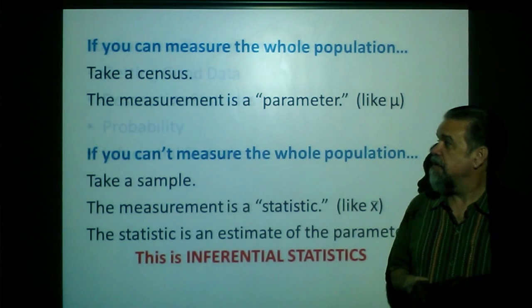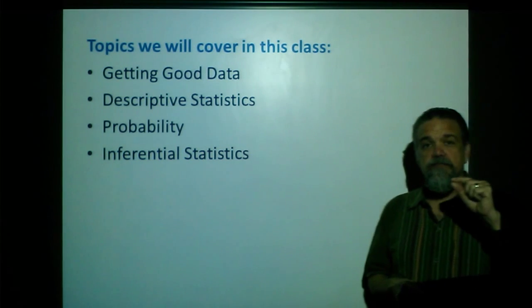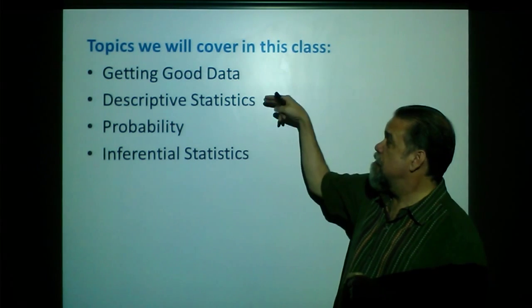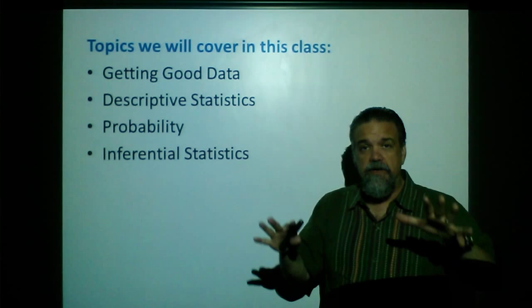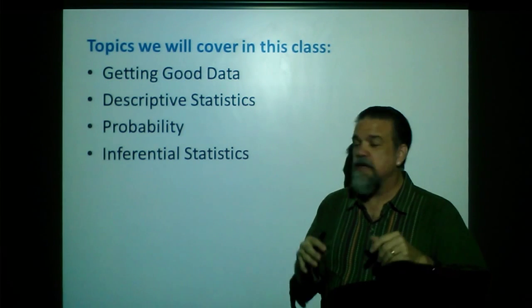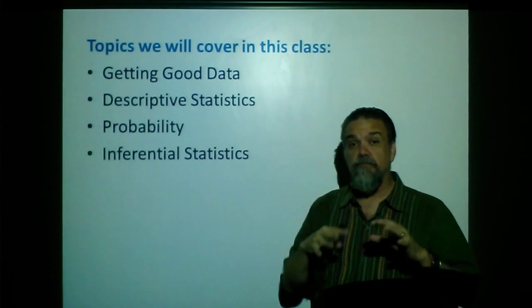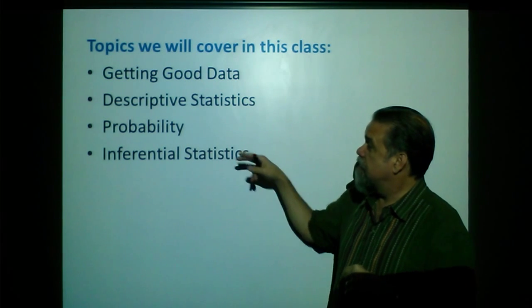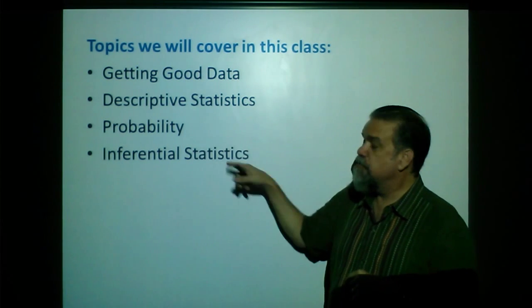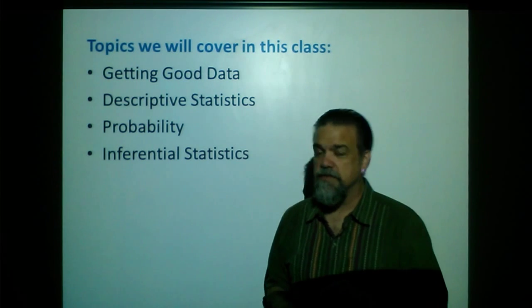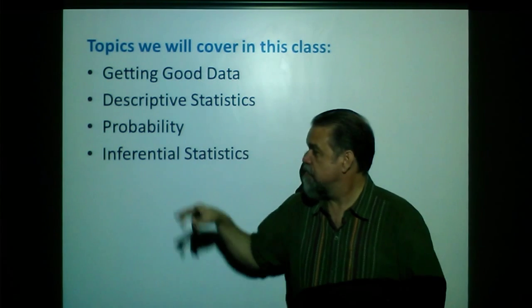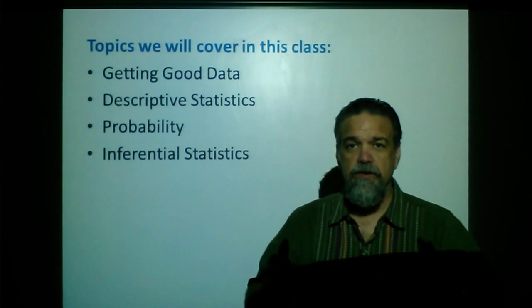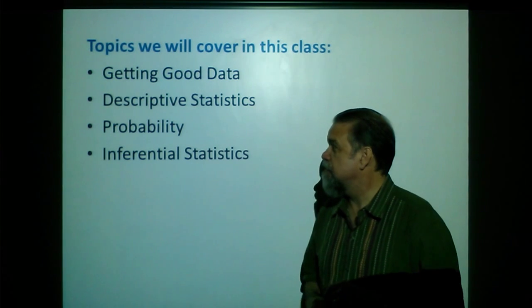So, that's what we're going to be doing in this class. Specific topics we're going to look at: We're going to look at how to get good data. Then we're going to look at descriptive statistics, how do we summarize and how do we illustrate. Then we're going to look at some probability rules, because you've got to have some rules to play the game. And that's actually my favorite part. And then we're going to finally look at inferential statistics. This is a year-long course, and this is what we're going to be doing in the spring semester.